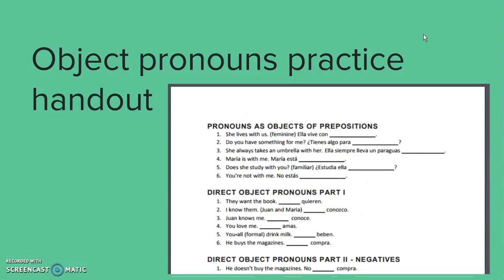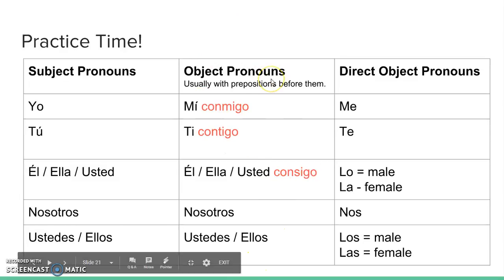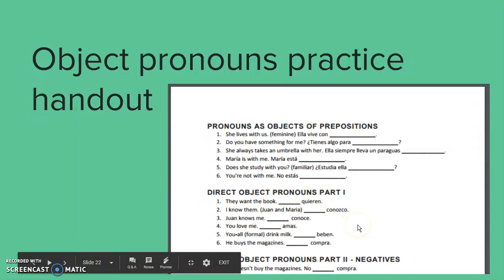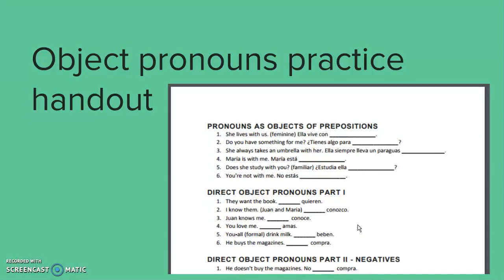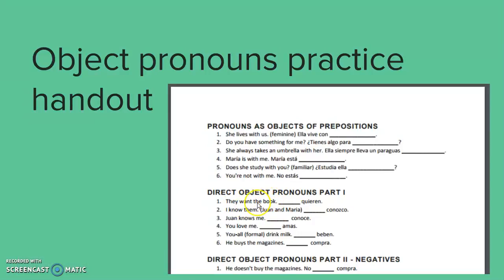On the back of the 'saber/conocer' worksheet, there are more exercises to guide you in practicing the previous lecture and this current lecture. You'll need to use objects of prepositions from the table, and then use direct object pronouns. There are two sentences — for example, talking about 'the book' — so you'll work with singular and plural forms like 'lo' and 'las.'